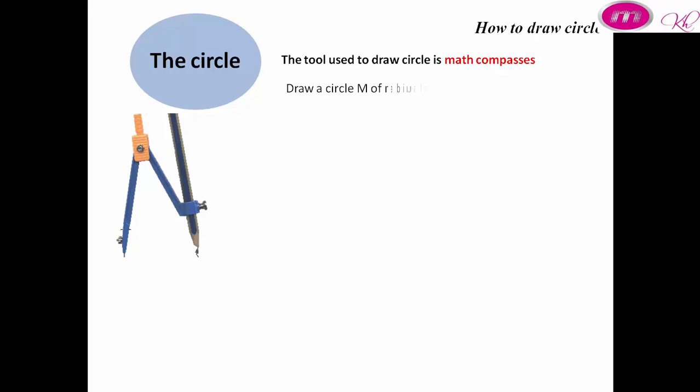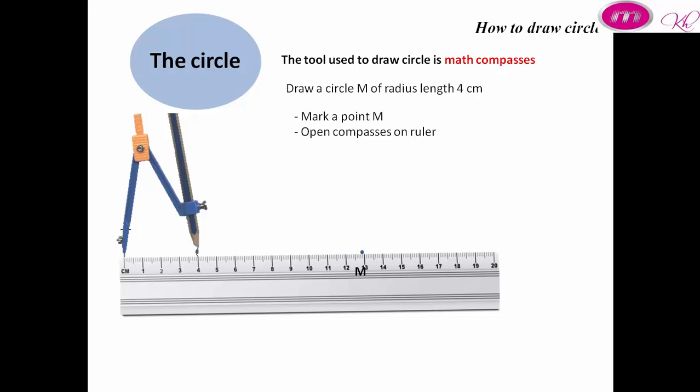Draw a circle M of radius length 4 cm. First, make a point M. Then open the compass on a ruler. The distance between the metal tip and pencil is 4 cm.